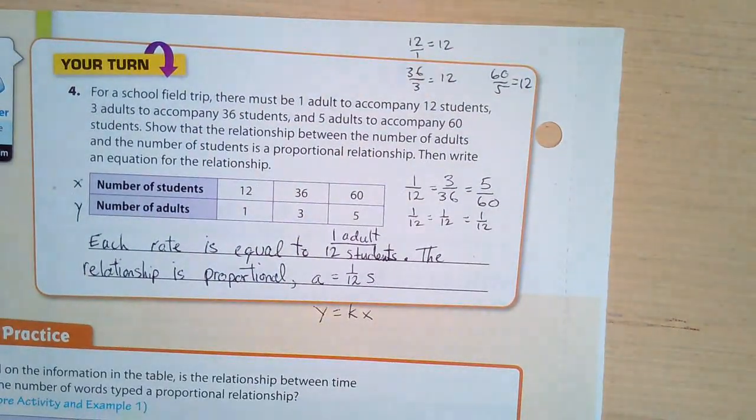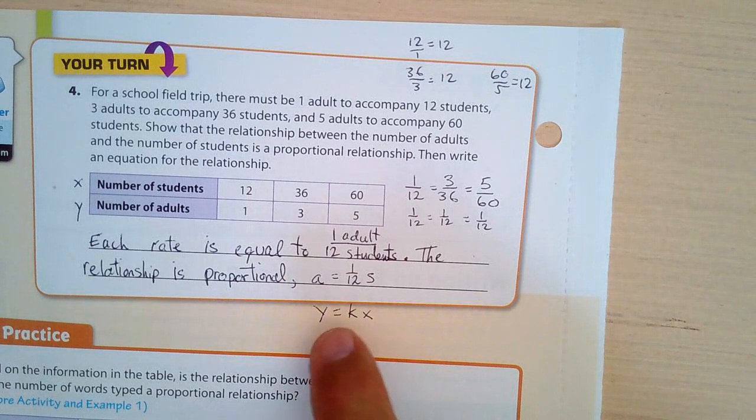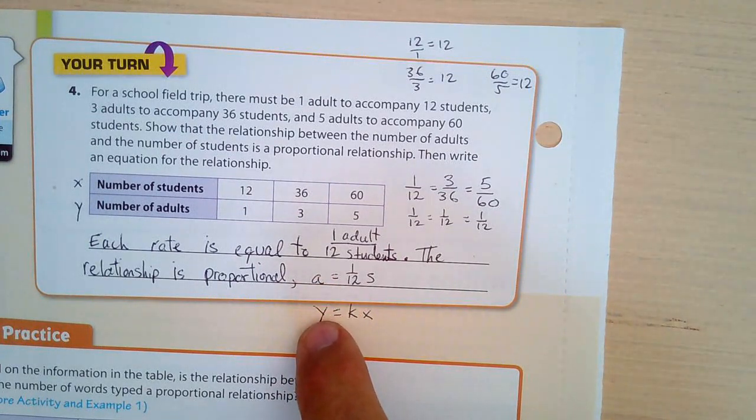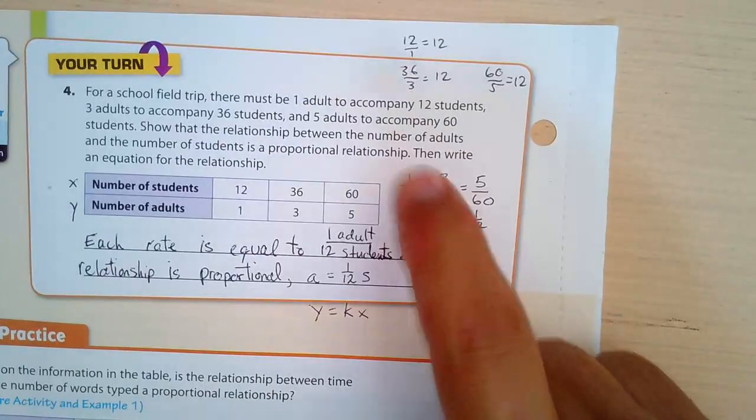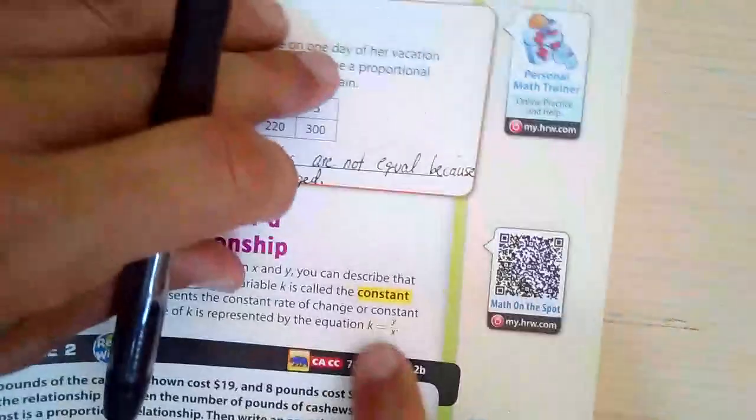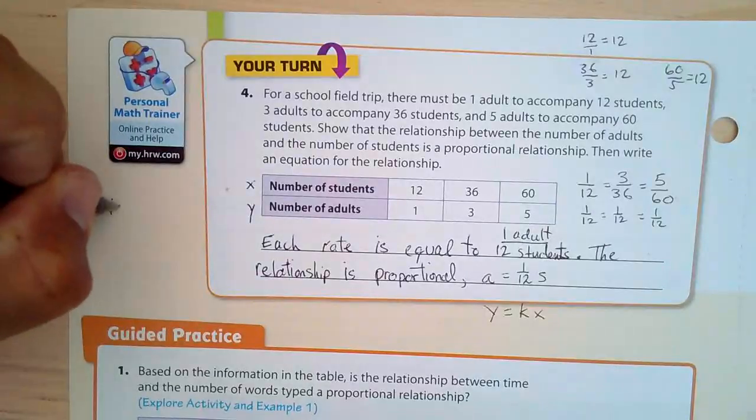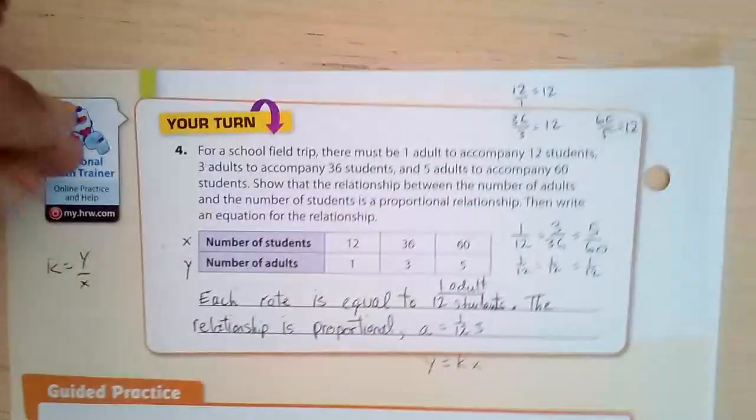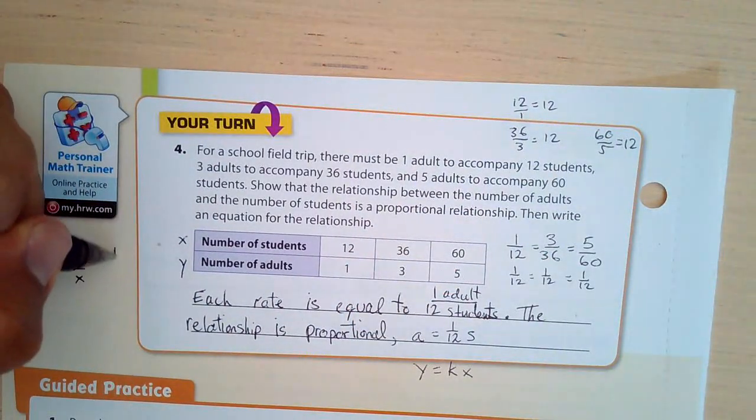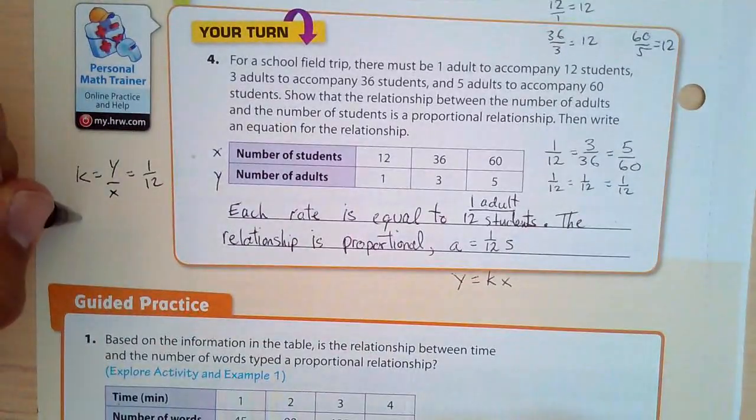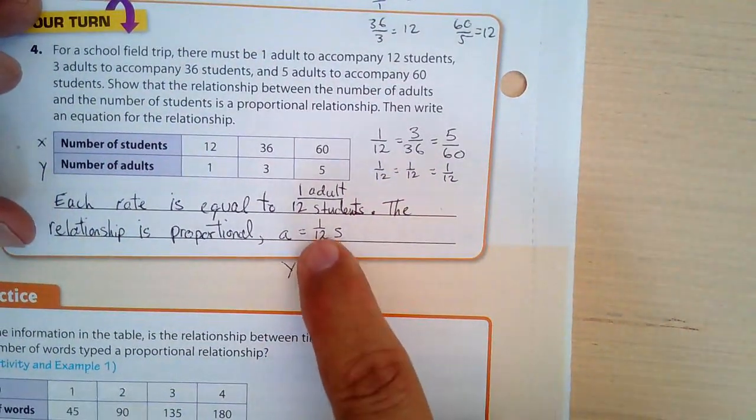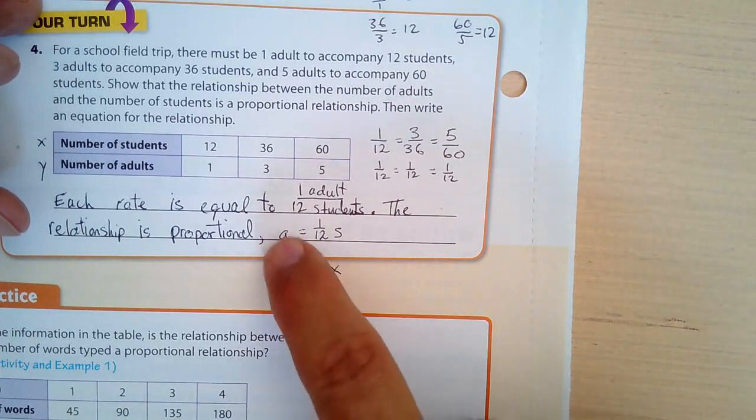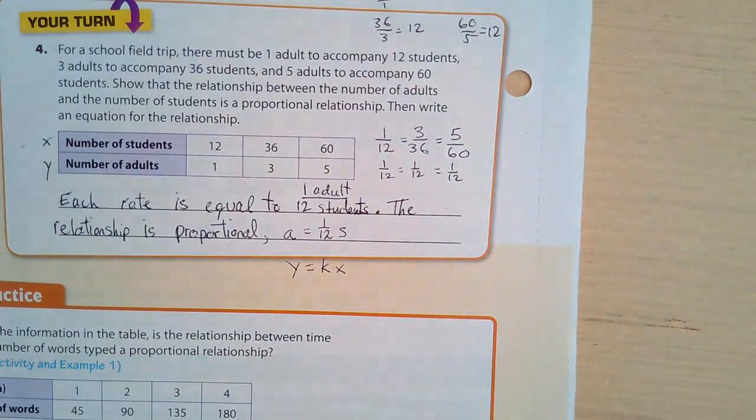And if we had Y equals KX, Y is the number of adults. So our textbook publisher said, call it A. You could probably call it Y. And then our rate of change is one 12th because remember, as it says right here, K is Y over X right there. So if I write here, K is equal to Y over X, then one over 12, that's one over 12. So then, as we have our Y equals KX here, K is one 12th. And A is simply mentioned for adults and X is for students. And that's what you got to know.